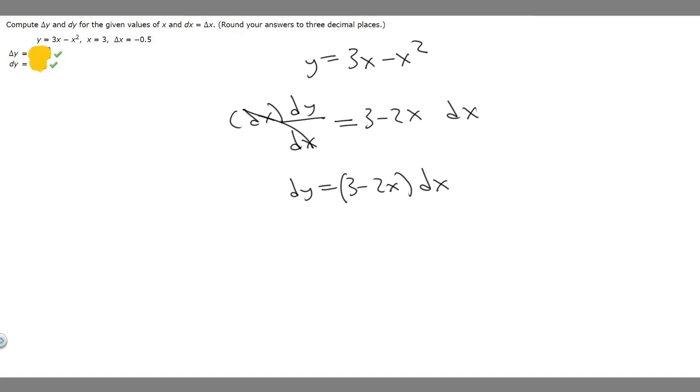Now that we got it like that, they tell us what x and dx is, so we just want to plug in the values. So dy equals 3 minus 2 times x, which is 3. They tell us that dx is equal to delta x, so we're just going to use delta x to be dx. So this whole thing multiplied by minus 0.5.